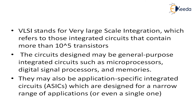General purpose ICs can be used for implementing any combinational or sequential circuits or whatever function is needed. For example, if I need a memory, I can use that memory — so they come under general purpose ICs. Another type of IC is the Application Specific Integrated Circuit, called ASIC. These are designed for a narrow range of applications or even a single one. For example, an IC designed for a washing machine is built for that particular machine only and cannot be used on other devices.